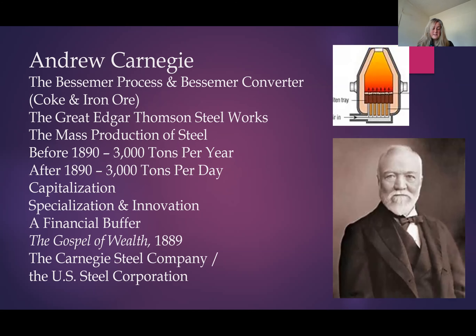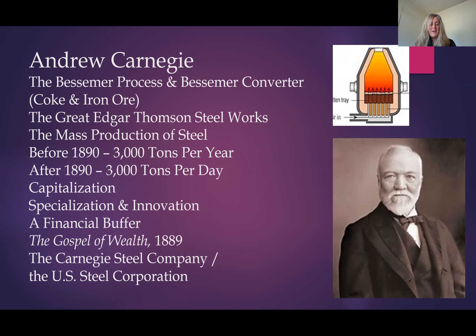Andrew Carnegie's success would come from the mass production of steel. Prior to the invention of the Bessemer process, the production of steel was very costly and very inefficient. By utilizing the Bessemer converter, Andrew Carnegie was able to create the largest steel manufacturing plant in the United States, known as the Great Edgar Thompson Steel Works. Before 1890, approximately 3,000 tons of steel was produced in the United States per year.